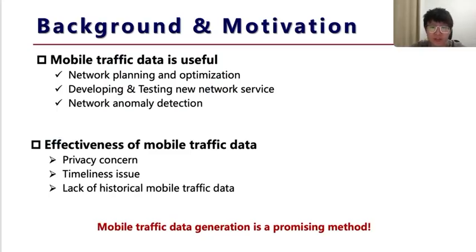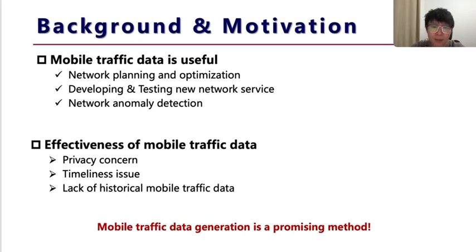First, mobile traffic is very important for network planning and optimization. Operators can analyze users' network demand and dynamic changes based on network traffic, adjusting planning and optimization strategy in advance, such as base station deployment and resource allocation. However, due to user privacy issues, network traffic data are difficult for researchers to obtain. Moreover, it's challenging to acquire historical network traffic data for areas lacking network coverage.